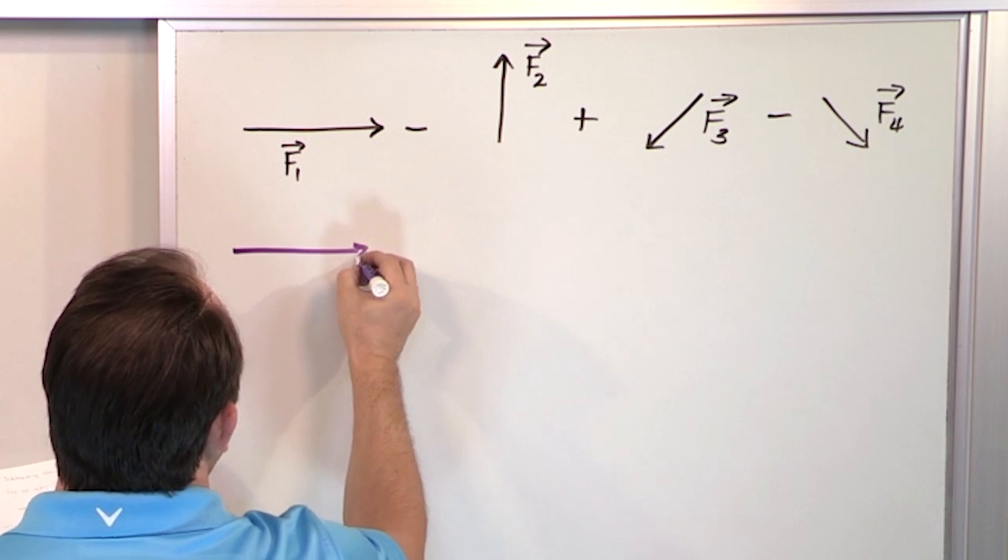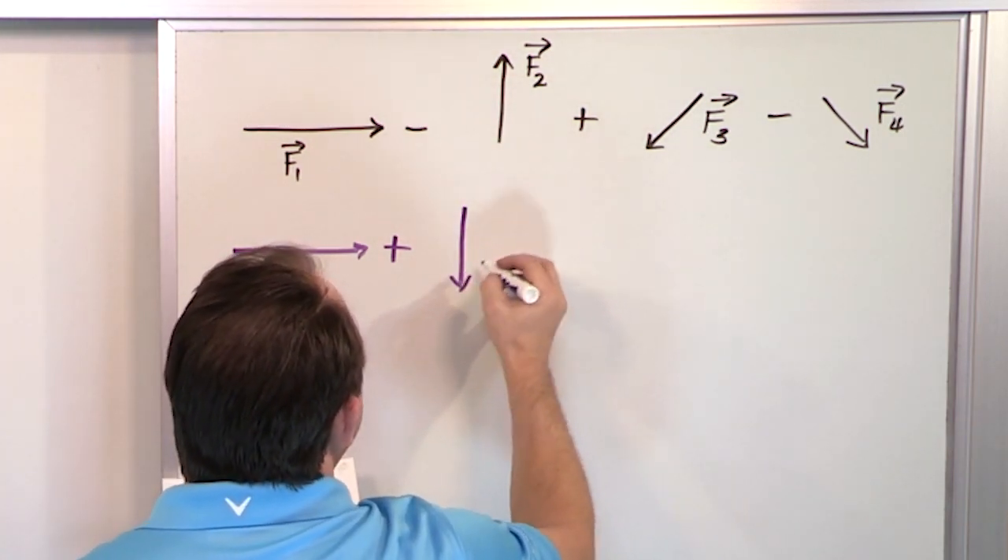What we're going to do is we're going to transform this problem into the following thing. F1 stays exactly the same because he didn't do anything wrong, for lack of a better word. This subtraction is going to be changed into addition. But in order to do that, we've got to flip this guy around. So he's going to be down, oriented down. But he's not F2 anymore. He's really negative F2.